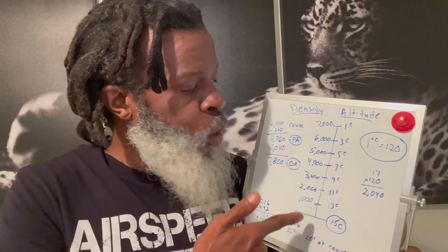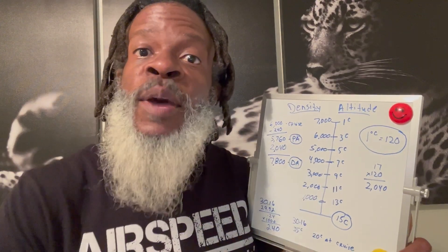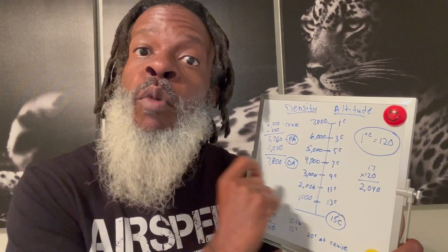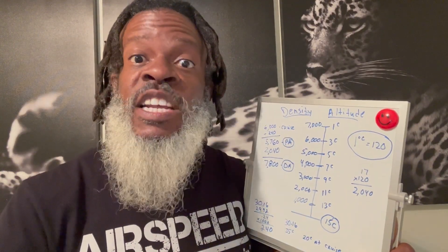Key components to remember for your density altitude calculation: one, the scale starts at 15 degrees Celsius, and for every 1,000 feet it goes up, you lose 2 degrees Celsius. And remember this: for every 1 degree of Celsius difference, you're going to add 120 feet to your calculations when you find the difference between outside temperature and standard temperature. Multiply that difference times 120.